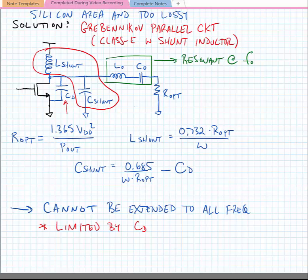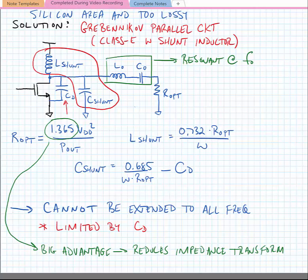One thing to note here, though, is that this 1.365 factor in R-opt is very good for us. The factor here reduces the required impedance transformation in order to produce the same amount of power.